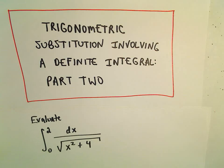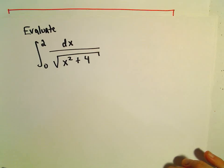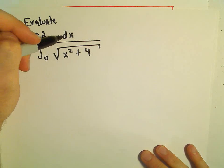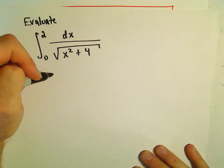In this video we're going to do a trigonometric substitution where we have a definite integral from 0 to 2 of dx over the square root of x² + 4.